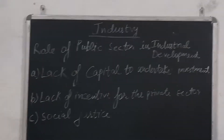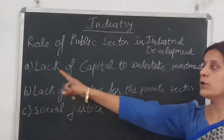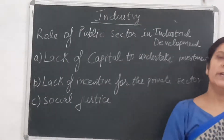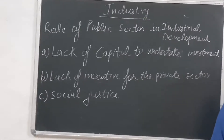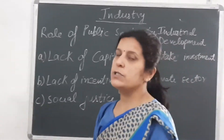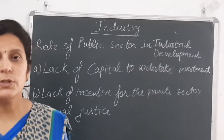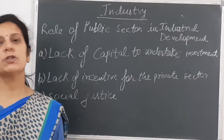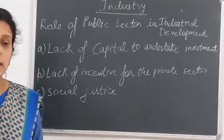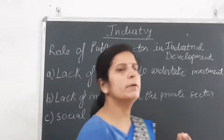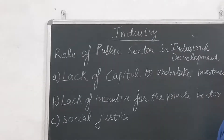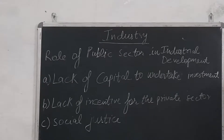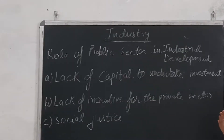Why was this lead role given to the public sector? The first reason is lack of capital to undertake investment. Up to the time of independence, we had only two industrial establishments in our country — one in Timijtpul and the other in Koolgara. Investment was necessary, but private investors did not have enough capital to start industries. Only a handful of investors were there, so the government had to play a lead role in the development of industries.